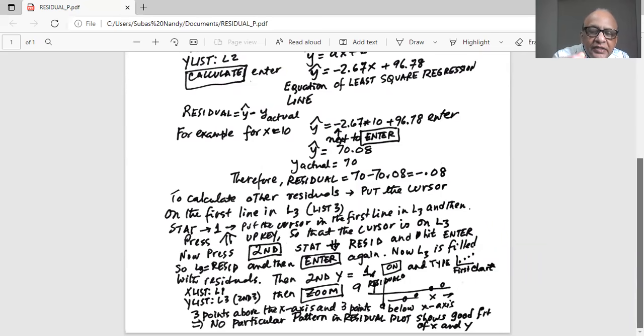So three points below the X axis and three points above the X axis. Therefore, there is no particular pattern in the residual plot, which shows that the least square regression line is a good fit between X and Y.